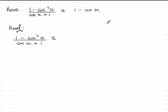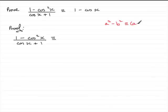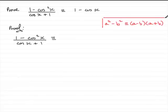Whenever you get something squared — let's say a squared minus something else squared, the difference of two squares — this is the square of a and this is the square of b. This is identical to a minus b multiplied by a plus b, or a plus b times a minus b. If you multiply this out, you'll see that you get a squared minus b squared. You should know this identity because you're going to use it lots of times in questions like this.